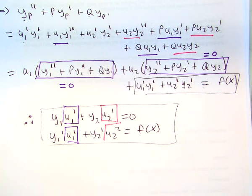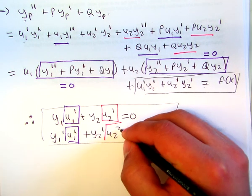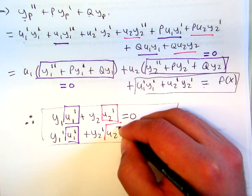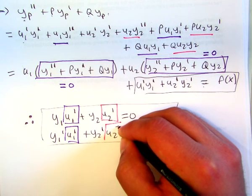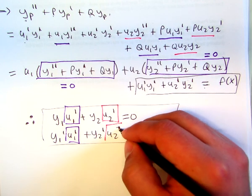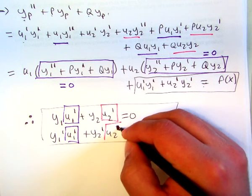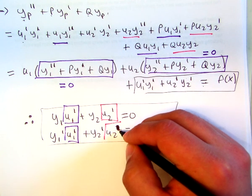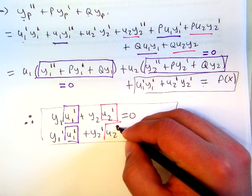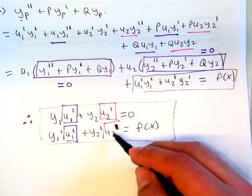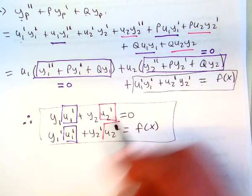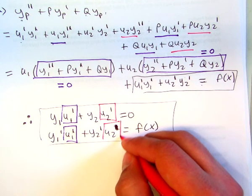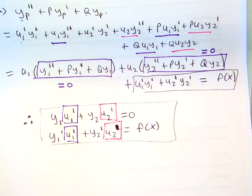Oh, caught a mistake. This should not be u2 squared. My bad. That should be u2 prime. I'm sure you guys caught that. That is one very large prime. Okay, so u2 prime, and this is also u2 prime right here.